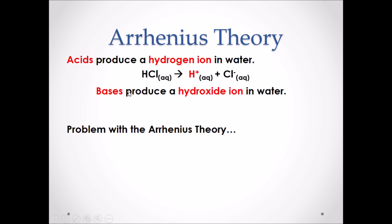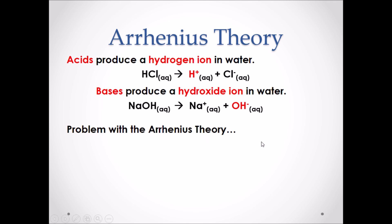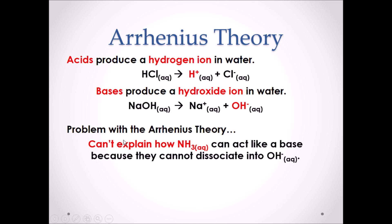In the Arrhenius Theory, bases produce a hydroxide ion in water. Bases are ionic compounds in the Arrhenius Theory and they dissociate in water to produce ions — Na+ and OH- in this example. However, there were many problems with this theory. Most notably, it cannot explain substances such as NH3 which act like a base but cannot dissociate into OH- in water.